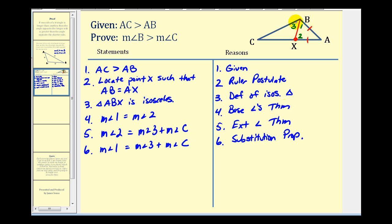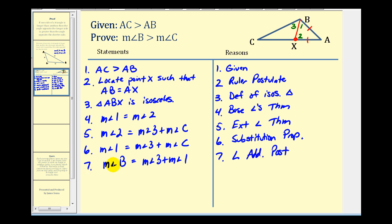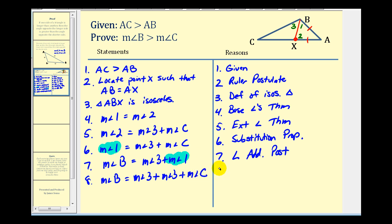Now let's take a look at angle B. The measure of angle B would be equal to the measure of angle three plus the measure of angle one, based upon how we set this up. This is true by the angle addition postulate. And now we want to create an equation that involves both the measure of angle B and the measure of angle C. For statement eight, we'll have the measure of angle B equals the measure of angle three plus — replacing the measure of angle one — the measure of angle three plus the measure of angle C. This is by the substitution property.